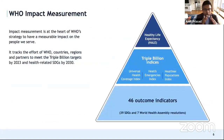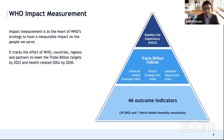The WHO impact measurement is at the core of WHO's strategy to have a measurable impact. It will track efforts from WHO, countries, partners, and regions to meet the triple billion targets by 2023, as well as the health-related SDGs by 2030. The year 2023 is near the midpoint of the SDG period, making it a good time to take stock of what's happening, assess progress, and determine where we need to accelerate.